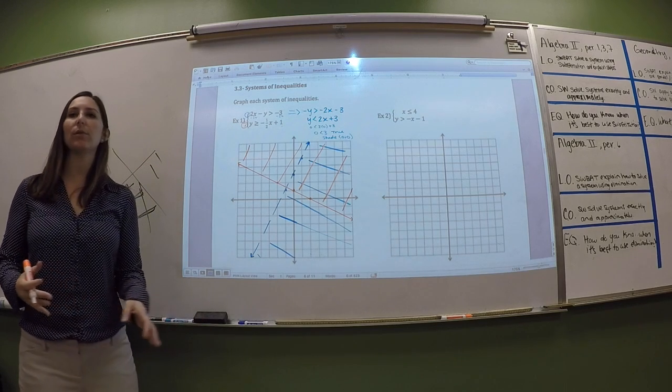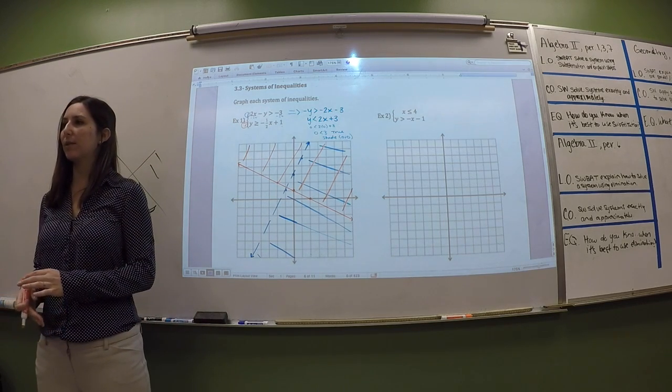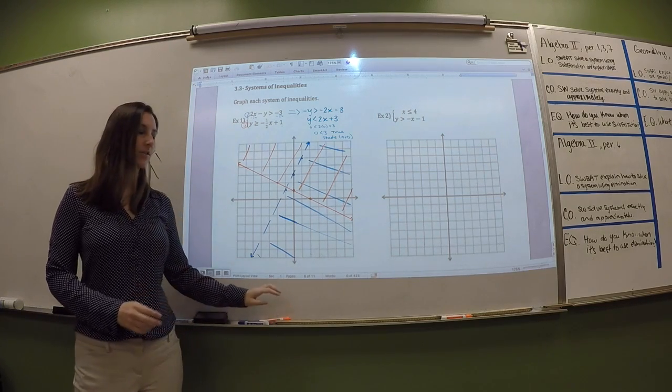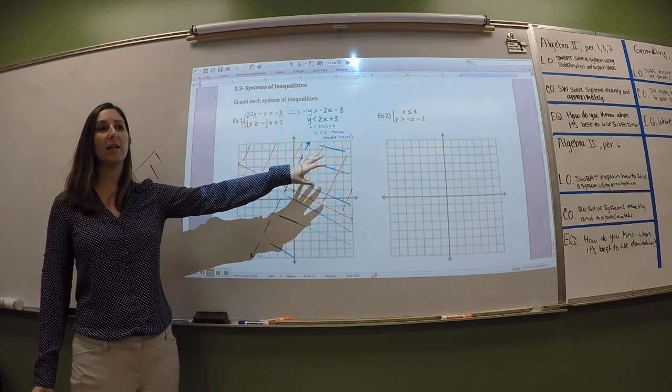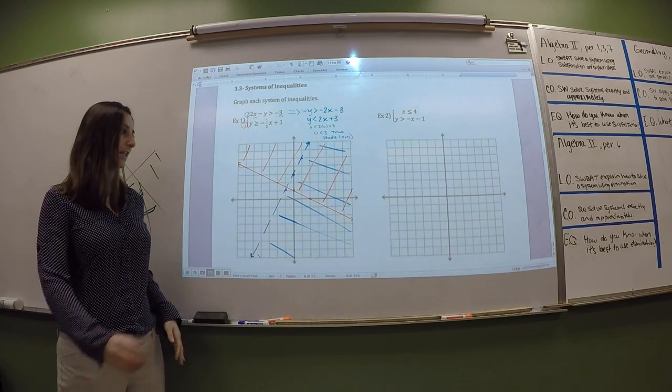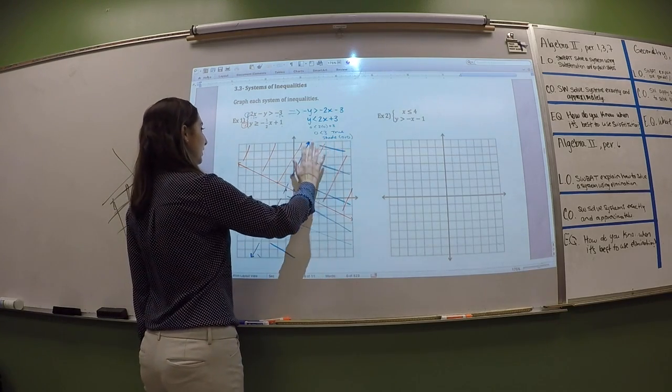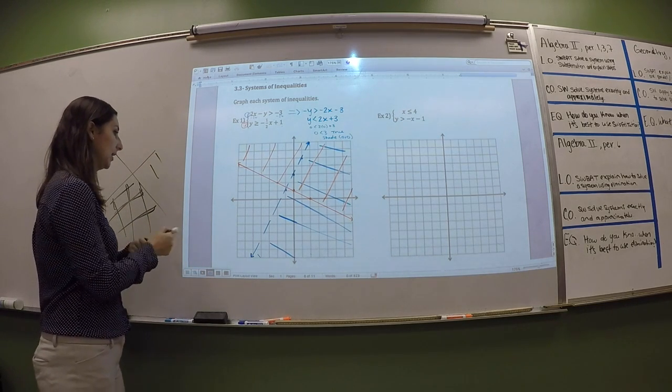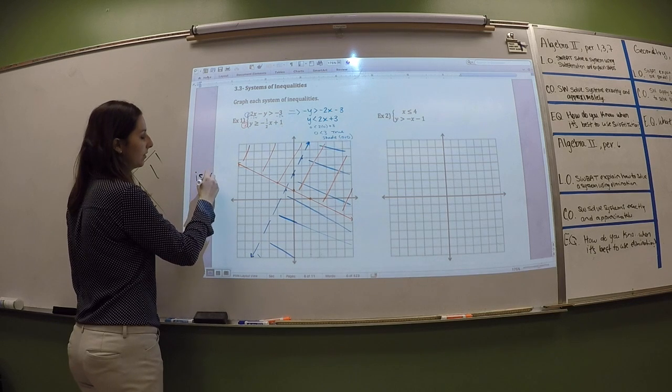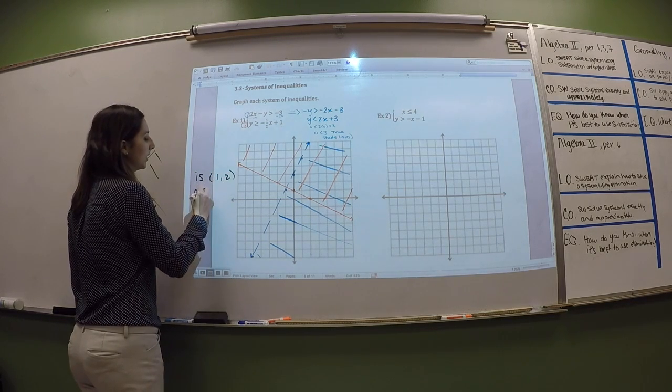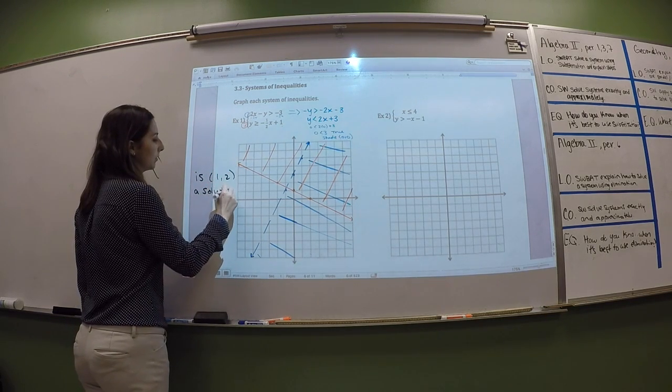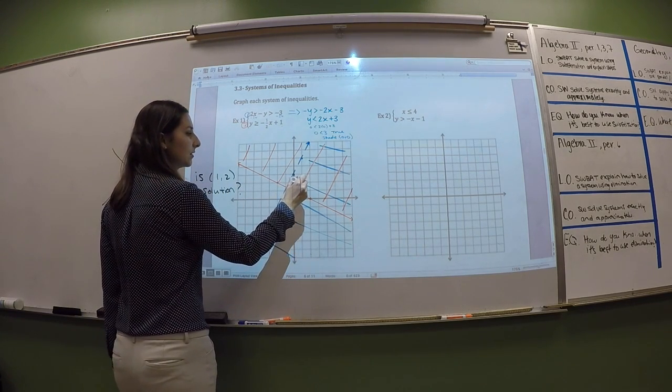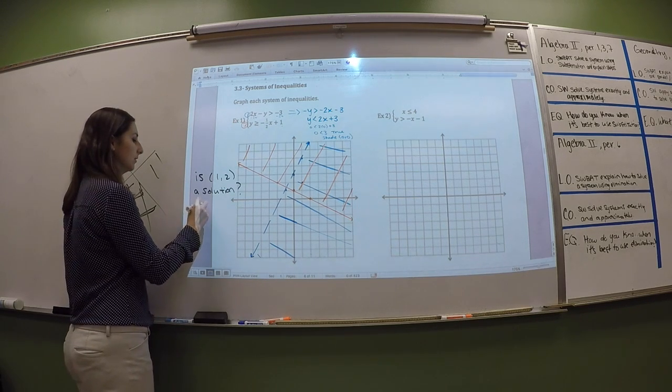Now when I shade, I shade in two different directions so that I can see what the double shaded area is. That double shaded area, that's your answer. So the stuff that is both blue and orange is your solution set. Any point that falls in this region is going to be an answer. So if I ask you something like, is 1, 2 a solution? So that's right here. Is that in the double shaded region? Yes.